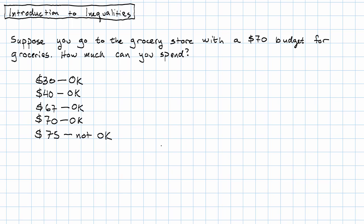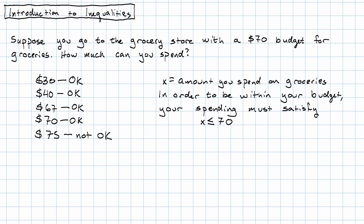In situations like this, instead of using an equation to describe the value the variable can take, we use what's called an inequality. In order to be within your budget, your spending has to satisfy the inequality x is less than or equal to $70, where x represents the amount that you spend on groceries.